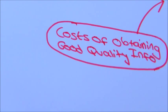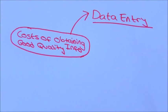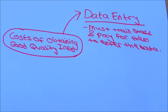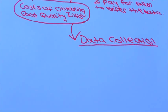The cost of obtaining good quality information: With data entry, the organisation must train staff and they must pay for the member of staff to enter the data. When collecting the data, human resources must be used in order to contact people to collect the information.